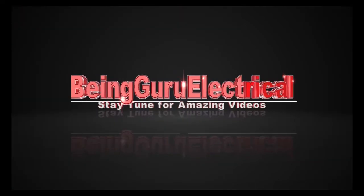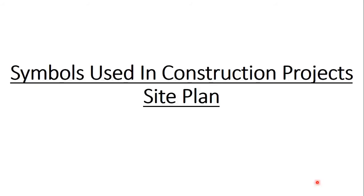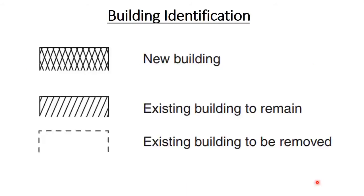Let's start. In any project there are some existing buildings and some new buildings. New buildings are represented by one symbol, existing buildings you want to remain in the project are represented by another symbol, and buildings to be removed from the project area are represented by a third symbol. These are the three building symbols commonly used in project site plans.